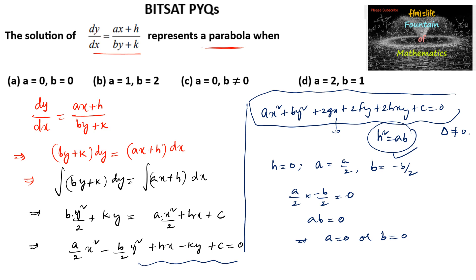Here a and b both cannot be 0. If both are 0, if a is 0 and b is 0, it will become a straight line, not a parabola. So we can consider either a not equals to 0 and b is equal to 0, or we can consider a is equal to 0 and b not equal to 0.